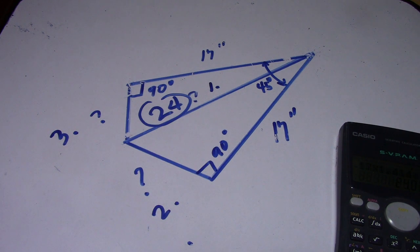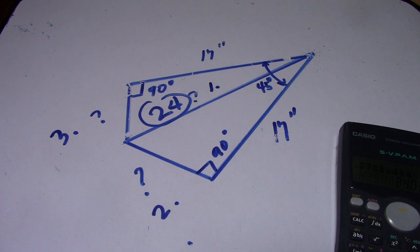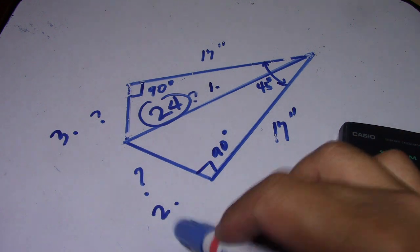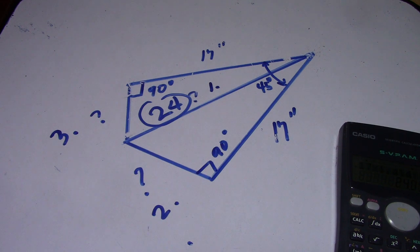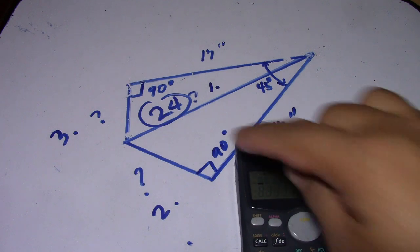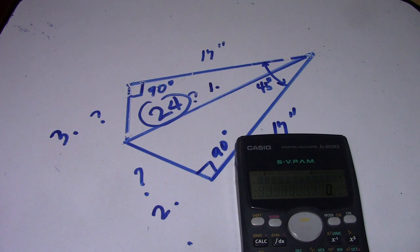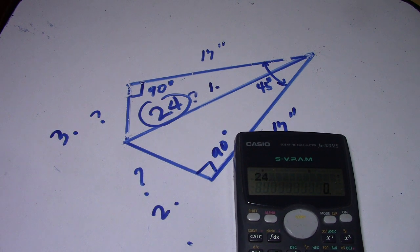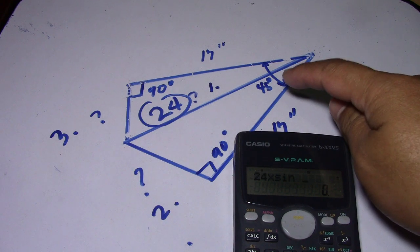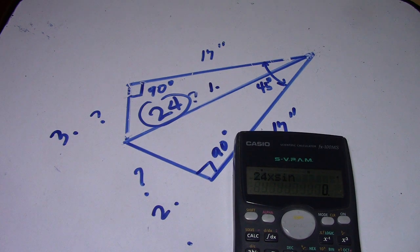Next is number two. The formula to find the length of a side when the angle is known is: side equals hypotenuse multiplied by sine of the angle. We will use 24.038, our answer from number one, so: 24.038 multiplied by sine 45 degrees.